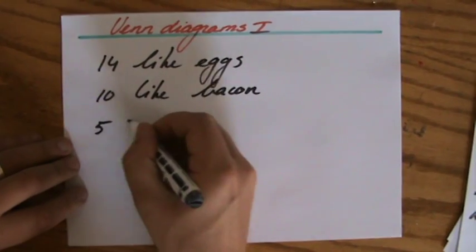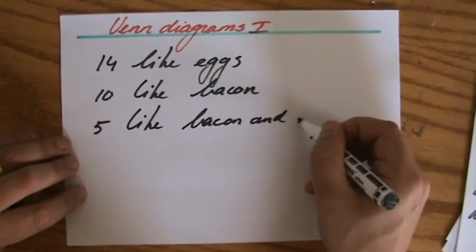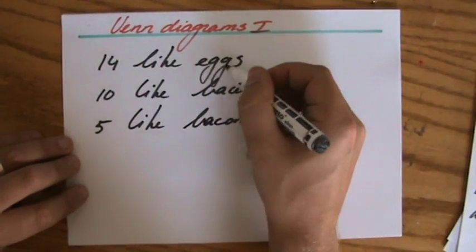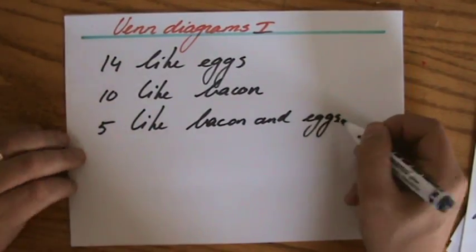And 5 people like bacon and eggs. So these people only like eggs, 10 people only like bacon and 5 people like bacon and eggs.